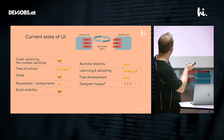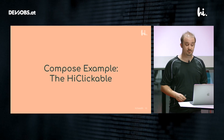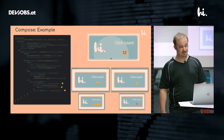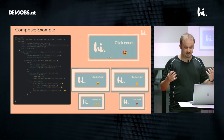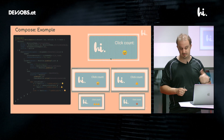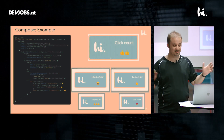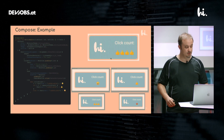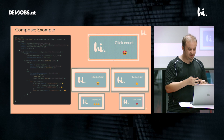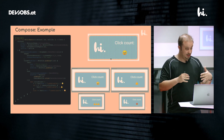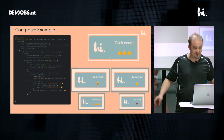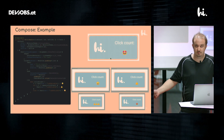Let's look at Compose with an example — the hi-clickable, which looks like this. It's a surface, a frame, with a logo, a text, and when you click on it it counts up thumbs up until you have five, then it shows a star emoji. On the left side you see all the code needed for that. This is all Kotlin, and it looks like scoped function calls — and that's what it is, a tree of function calls.